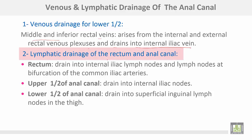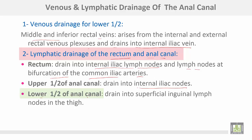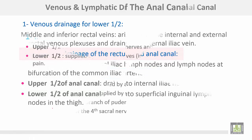Lymphatic drainage for the rectum and the anal canal: the rectum drains into internal iliac lymph nodes and the lymph nodes at the bifurcation of the common iliac arteries. The upper half of the anal canal drains into internal iliac lymph nodes, while the lower half of the anal canal drains into superficial inguinal lymph nodes in the thigh.